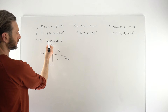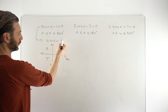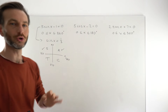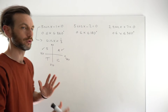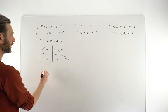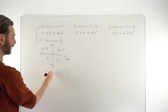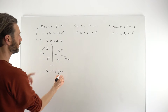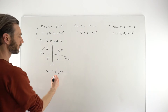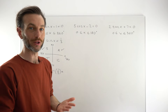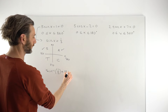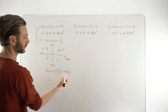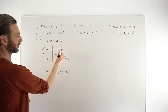We look at the function and see that sine is equal to a positive value. That means we check the first and second quadrants on the CAST diagram. Because we're working with a calculator, we do the inverse sine of 1/3. I calculated this earlier and it comes out to 19.5 degrees. That value is between 0 and 90, so that solution is the one in the first quadrant.